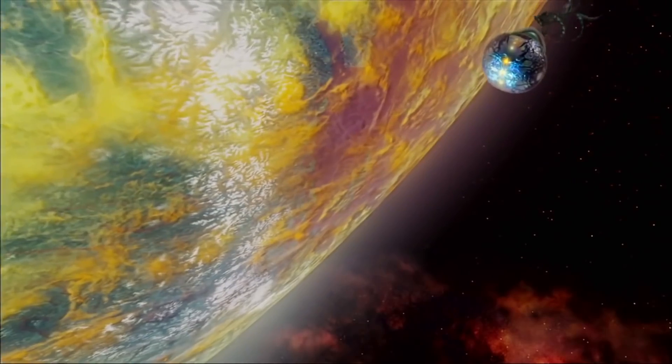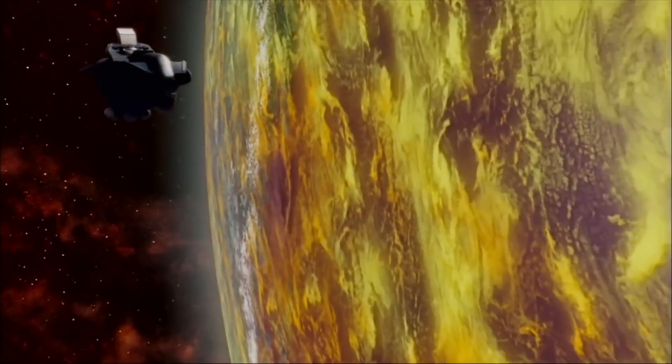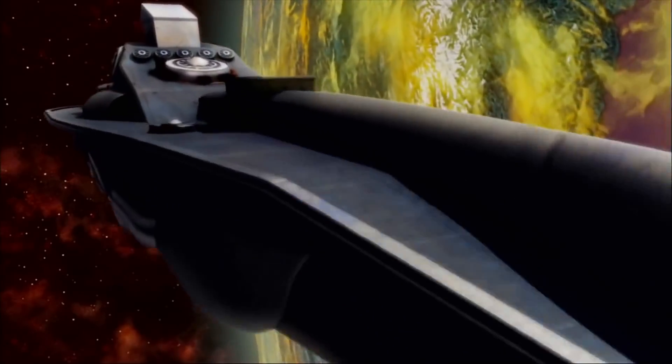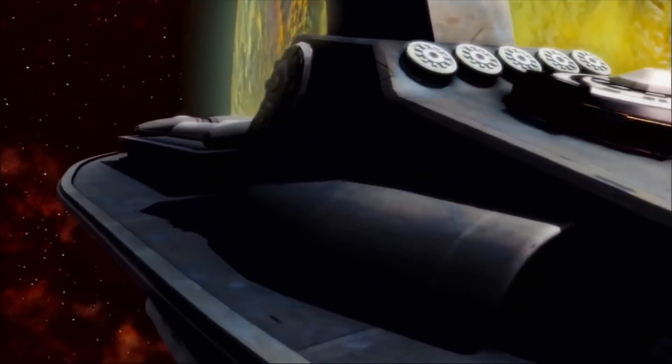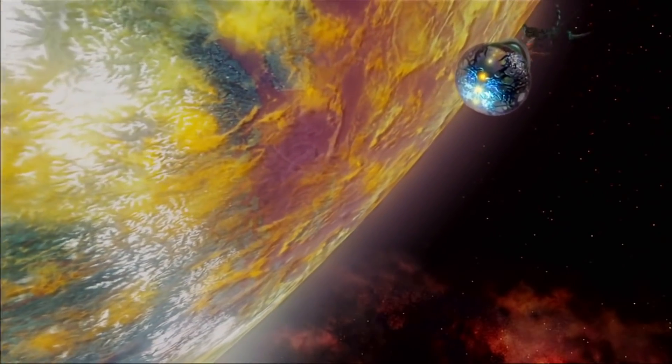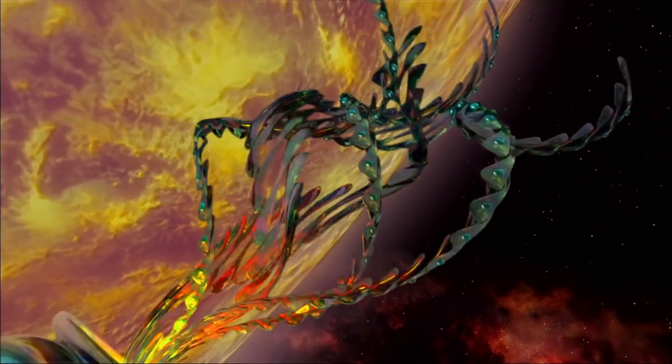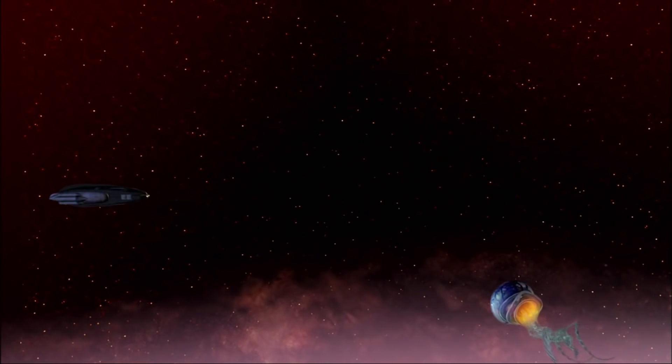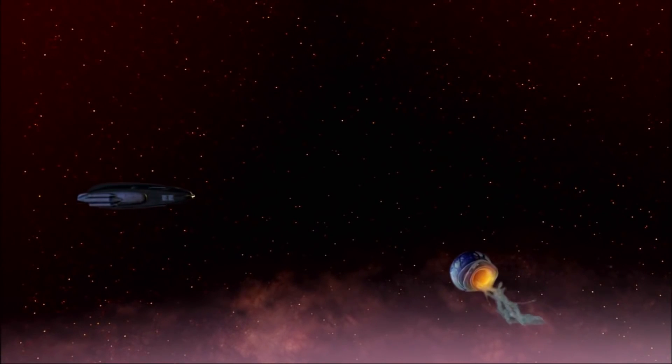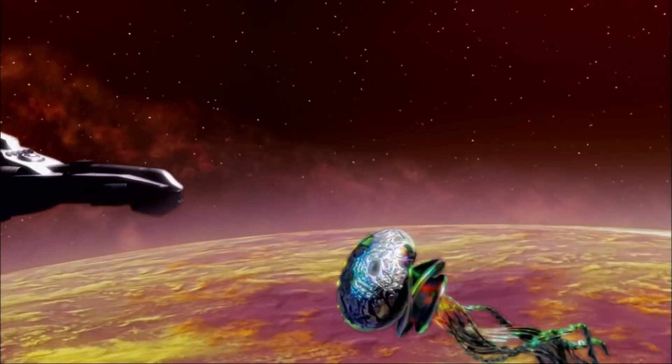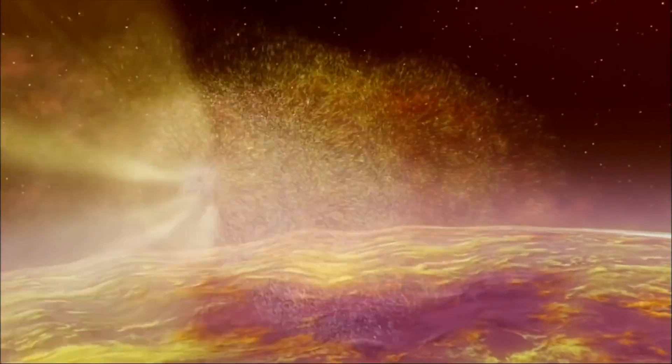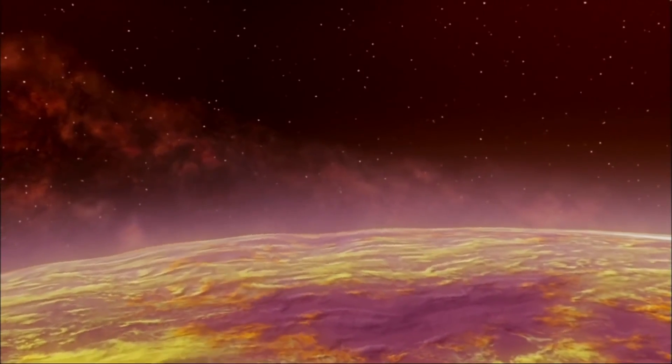Imagine two spaceships hurtling through space on a collision course. One is made of regular matter. The other is an antimatter craft built by an alien civilization. The impact would be spectacular, and there would be no wreckage left behind for cosmic crash investigators to examine. The matter and the antimatter disappear. Boof, they're gone. But the energy doesn't disappear. The energy re-emerges in the form of two very energetic gamma rays, photons.